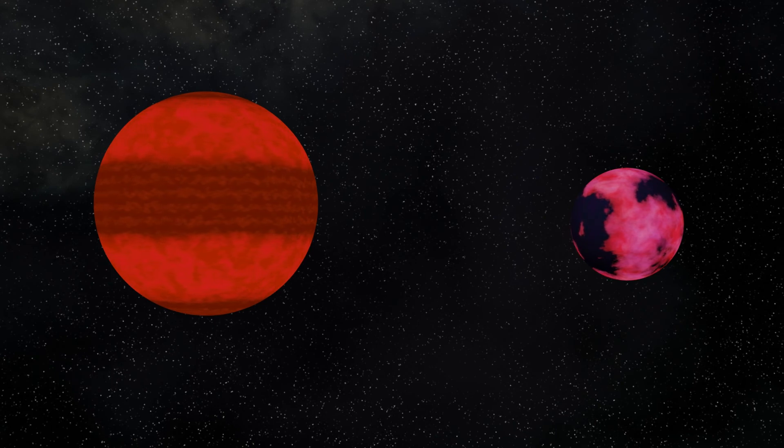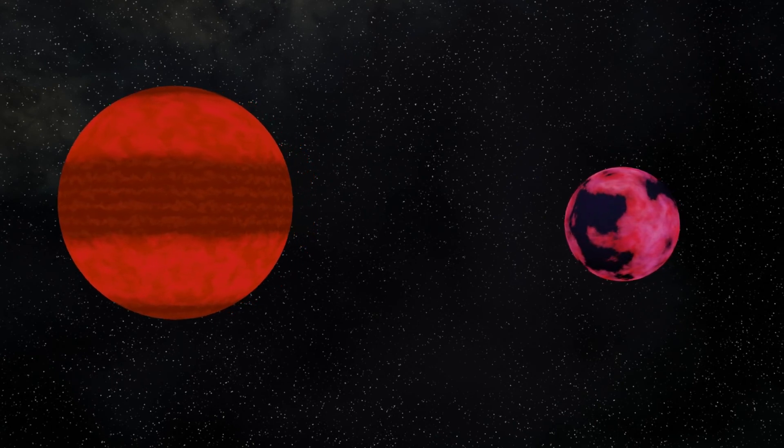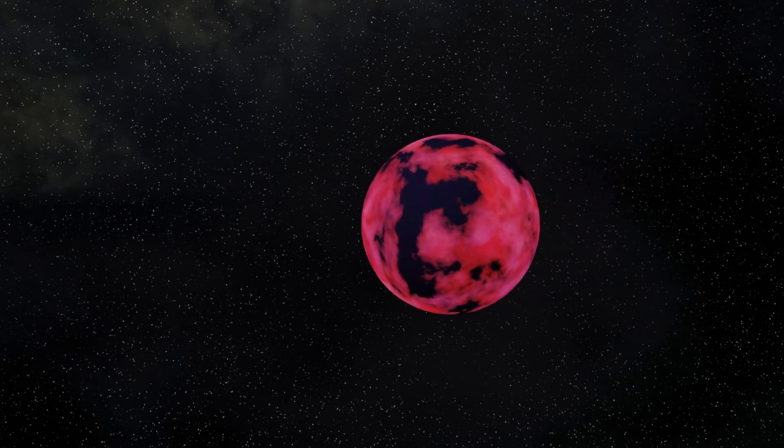The next closest system to the sun after that is very strange indeed, and contains not one, but two brown dwarfs. Welcome to Lumen 16, let's find out more.